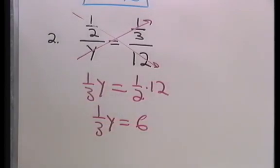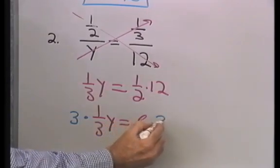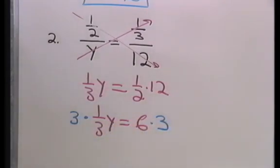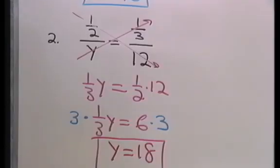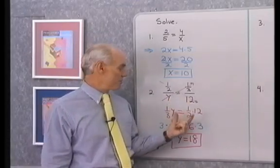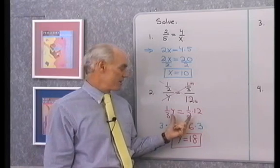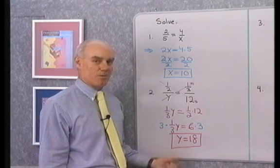And you can see that if I use my multiplication property right here and multiply both sides by 3, then I'll end up with 3 times 1/3, which is 1, times y, which is y, equal to 18. So, this is a pretty easy problem to solve once I just use that means extremes property to get this little equation out. Once I have this equation, I have (1/3)y is equal to 6. I multiply both sides by 3 to just get y.